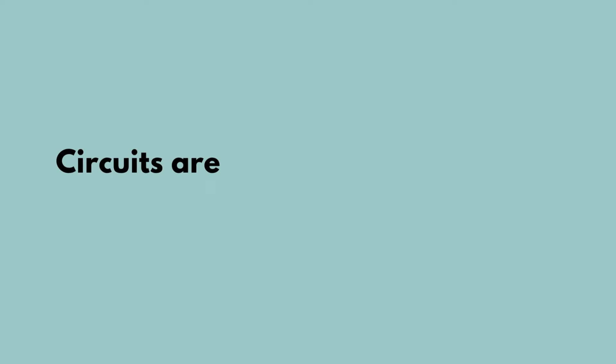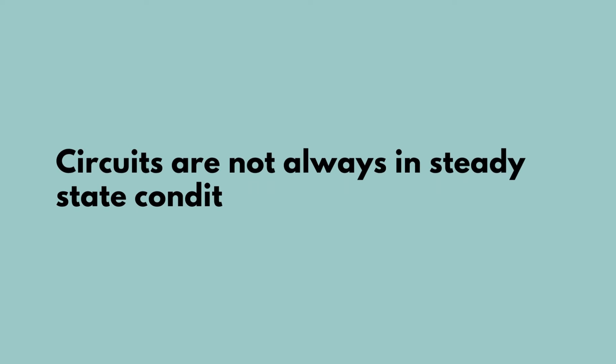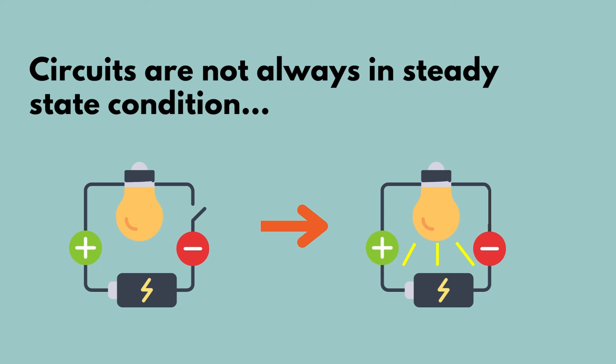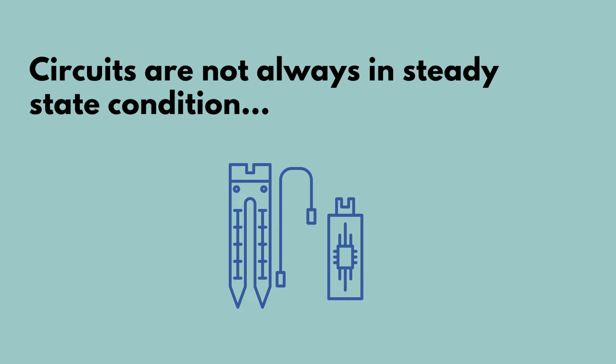Circuits are not always stable or in the steady state condition, but they can be subjected to sudden step changes in the form of changing voltage levels or input conditions. For example, when we open or close an input switch, or when the circuit receives fluctuations in voltage levels due to sensor data being transmitted.